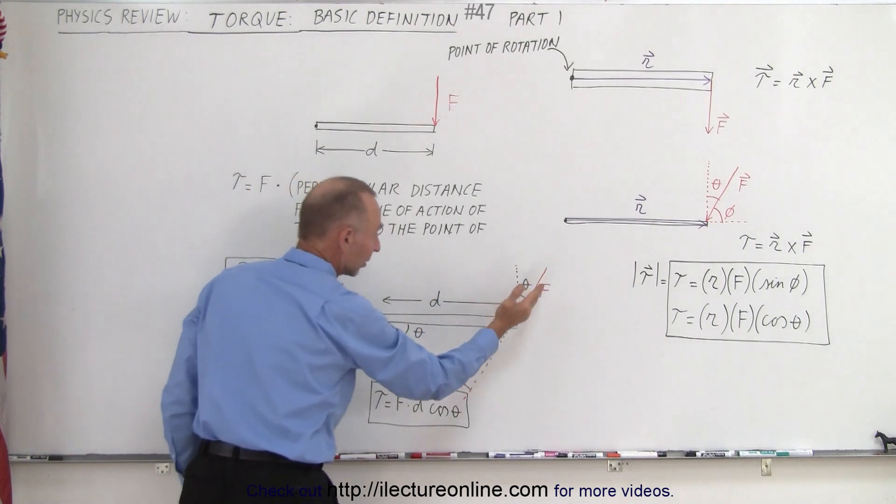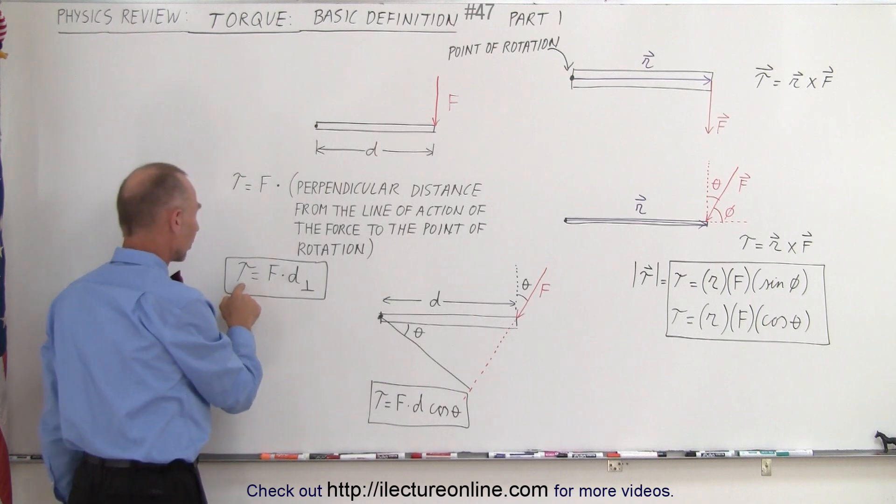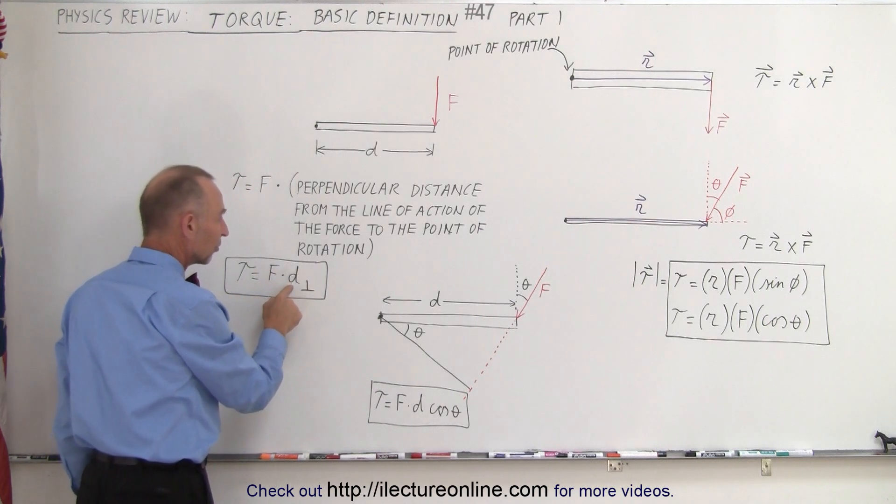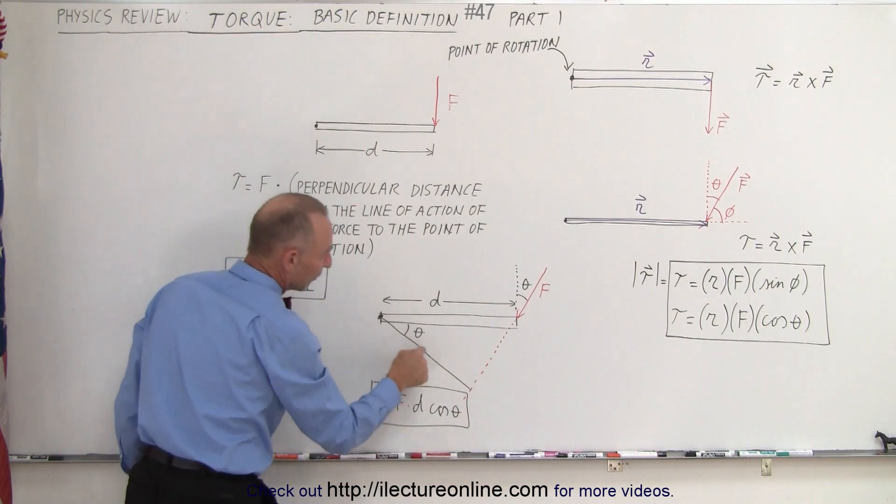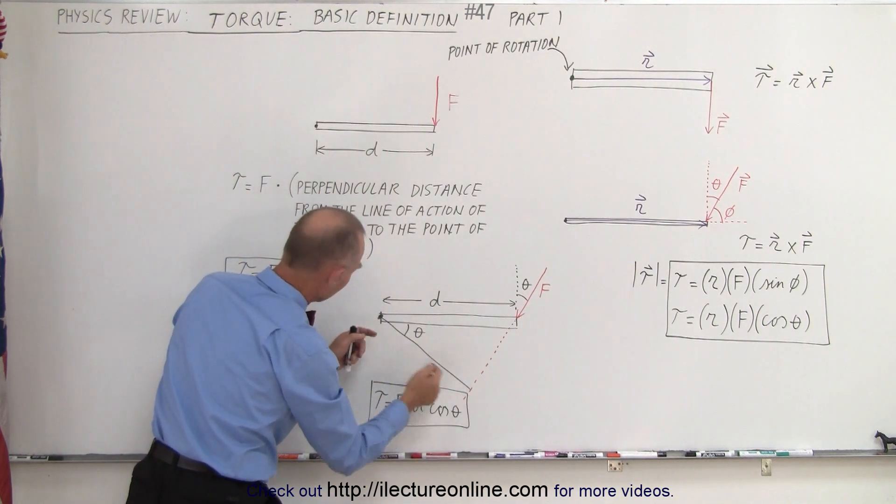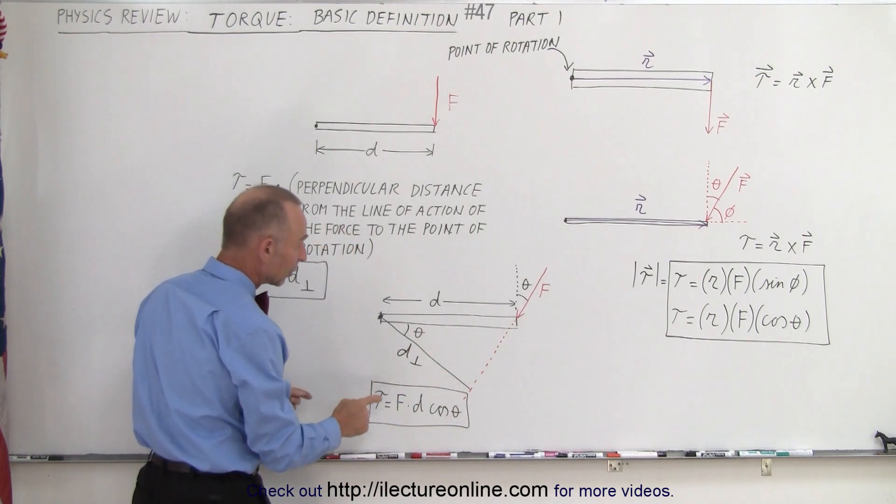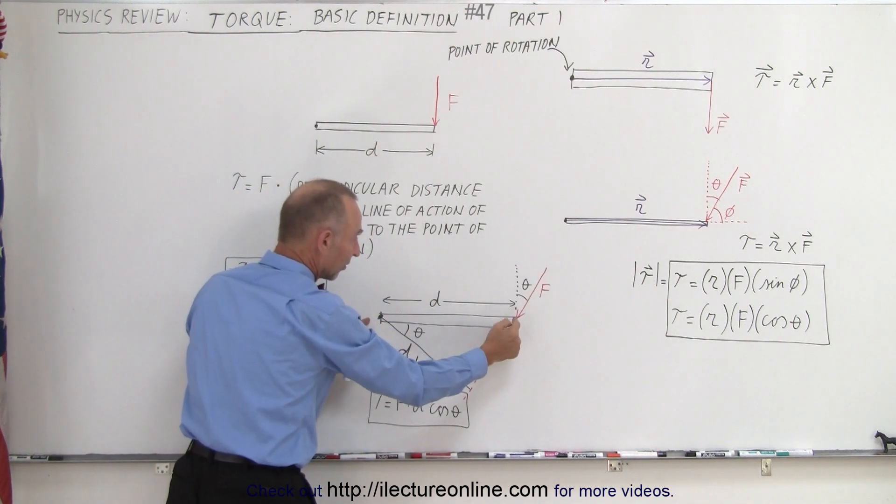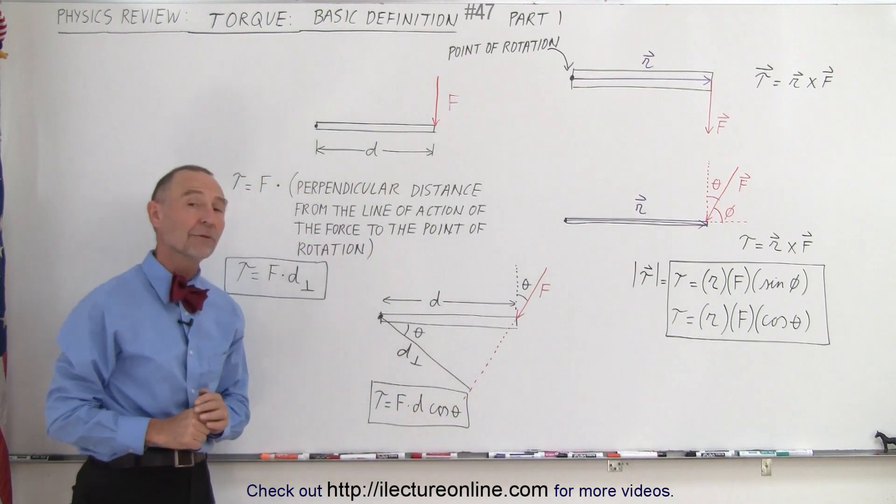When the force acts at angle theta with respect to the perpendicular, the torque equals force times the perpendicular distance from the line of action to the pivot point. This distance is d perpendicular, which equals force times distance times cosine theta, giving us the same result.